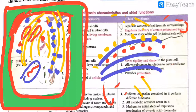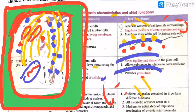When ribosomes are present on top of the endoplasmic reticulum, it is called the rough endoplasmic reticulum. Without ribosomes attached, the endoplasmic reticulum is called the smooth endoplasmic reticulum — so rough ER with ribosomes, smooth ER without ribosomes. The one chief function of the ribosomes is protein synthesis.